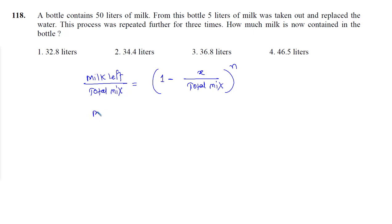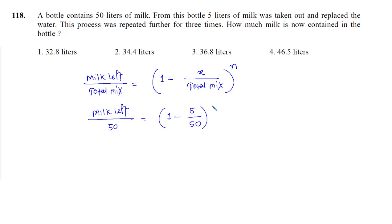So: milk left divided by 50 equals (1 minus 5/50) to the power 4. The total process was performed how many times? Once and then three more times — total four times. Let's solve this.